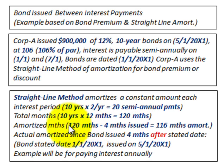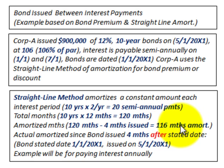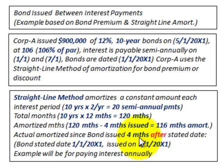Now the amortized months: we have 120 total months, but since the bonds are issued four months after the stated date, those first four months aren't included in calculating the amortization period. We subtract those out, giving us 116 months to amortize these bonds. The stated date was 1-1-20X1 and the issue date was 5-1-20X1 — those four months are where the difference comes from.